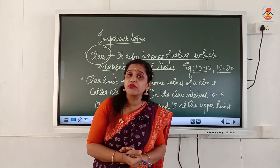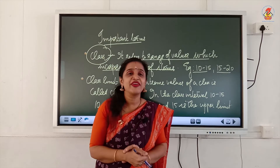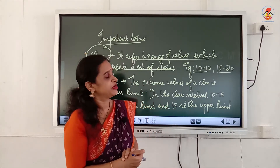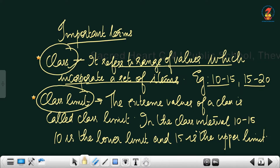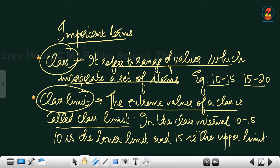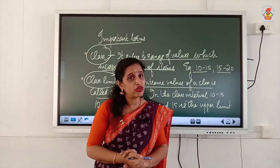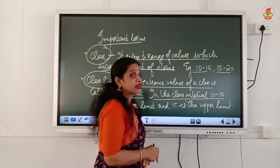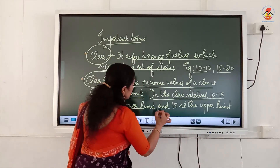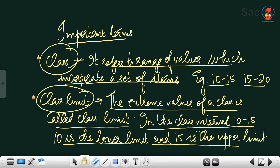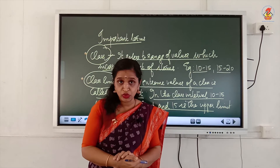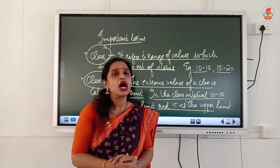We do not have a clear cut idea how many students got 11 or 12 marks, but we know 4 students secured marks between 10 to 15. The next concept is 'class limit' — the extreme values of a class. In the class interval 10 to 15, 10 is the lower limit and 15 is the upper limit. The class starts with 10 and ends with 15.